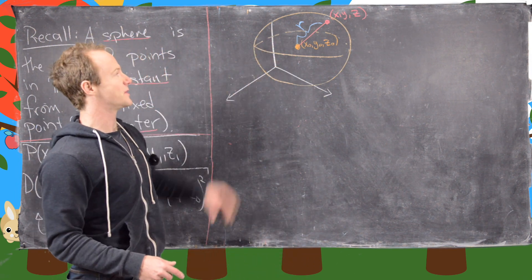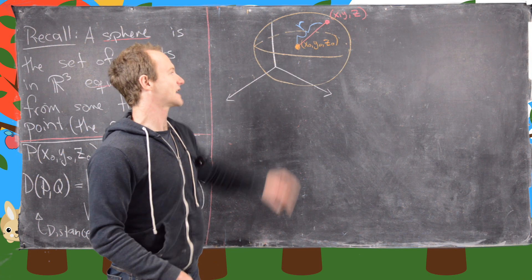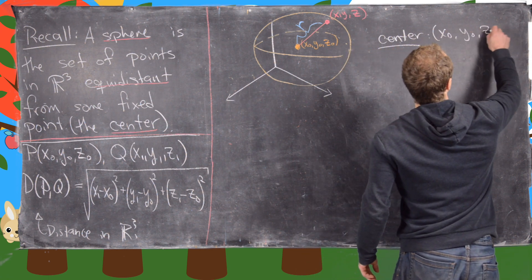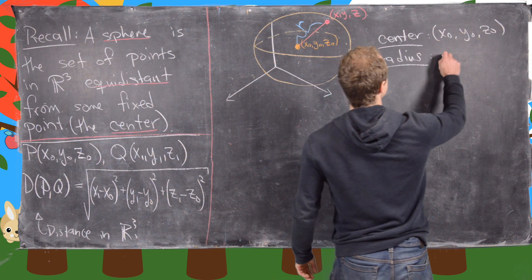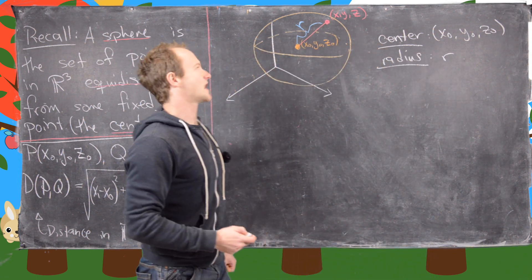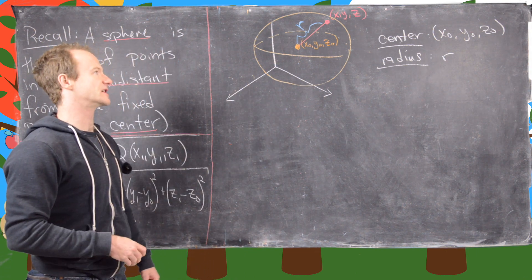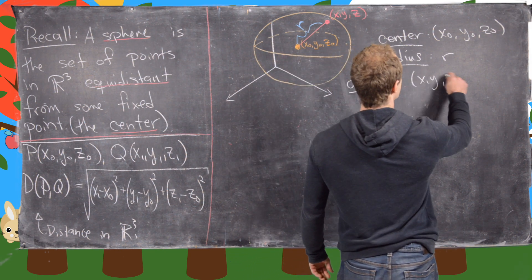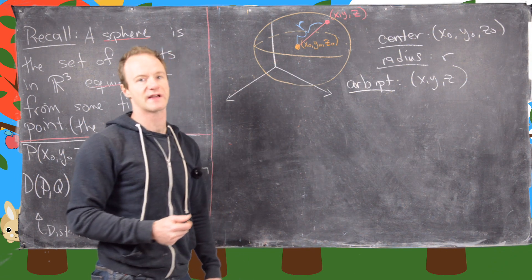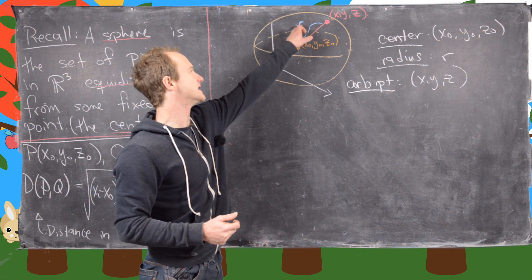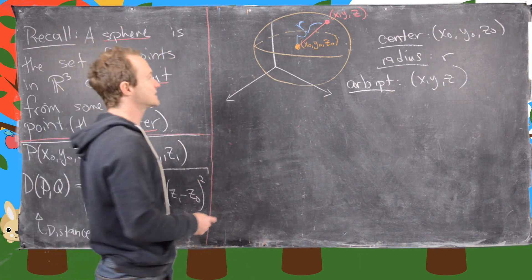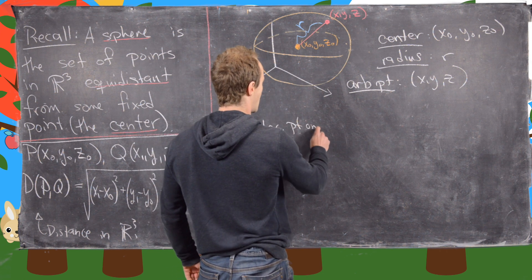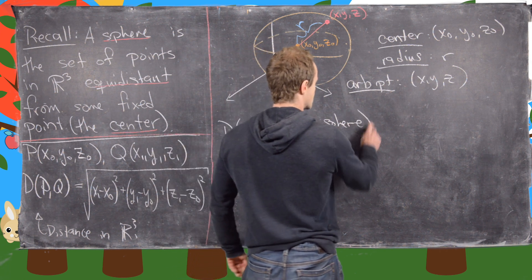I've sketched up a sphere in three dimensions, and notice we have a center point of (x₀, y₀, z₀) and a radius of R. An arbitrary point on the sphere is given by (x, y, z). What we want to find is what equation relates x, y, and z, given that they're on a sphere of radius R centered at (x₀, y₀, z₀). We know the distance from the center to any point on the sphere will be equal to R.